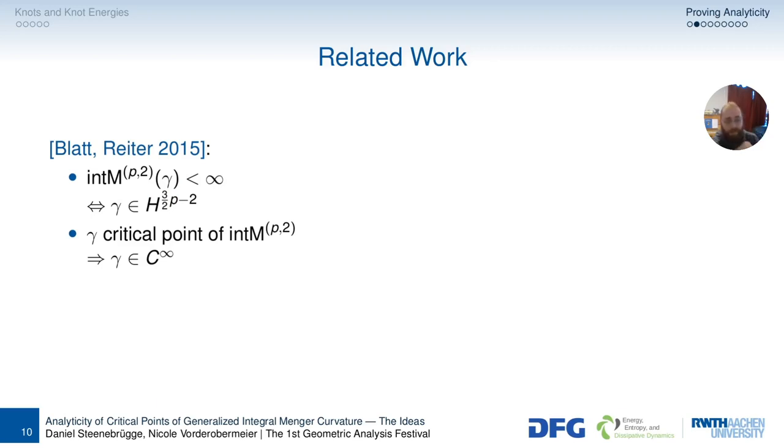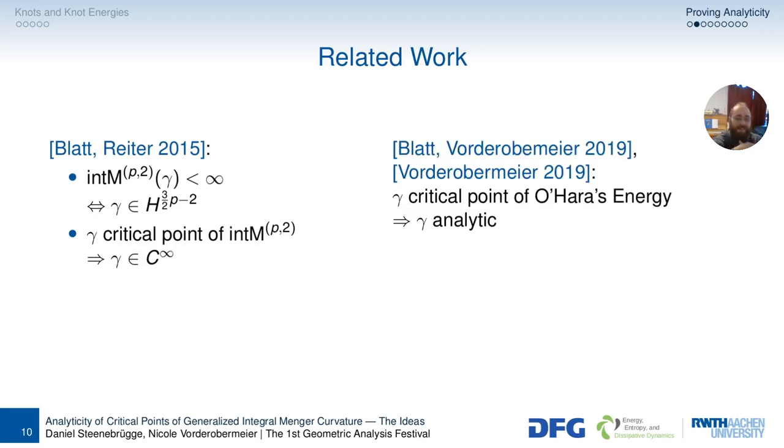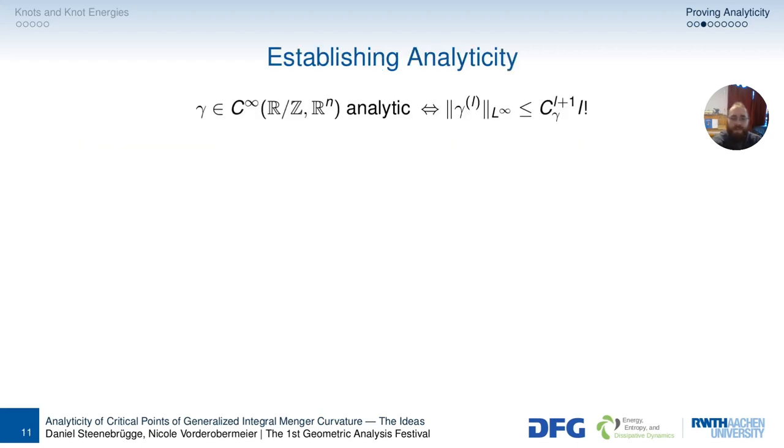But you can do one better. And actually, there has been work done. And this is by my colleague, Nicole, and together with her advisor, Simon Blatt, that if gamma is a critical point for another knot energy called O'Hara's energy, or a subclass of that, then gamma is analytic. And now the way forward seems clear. We have this thing done for one knot energy. Let's do it with ours. How do you do that?